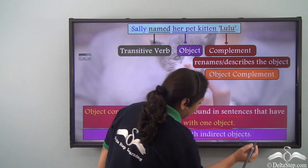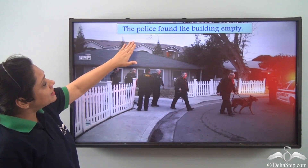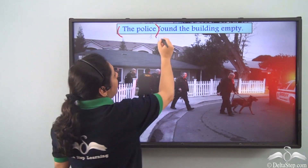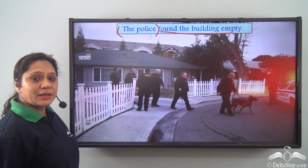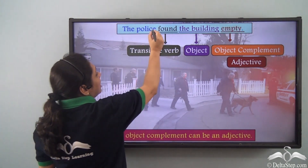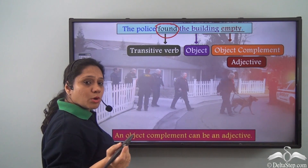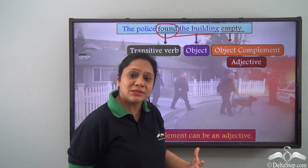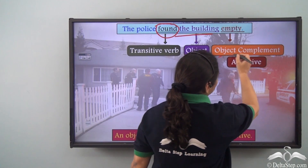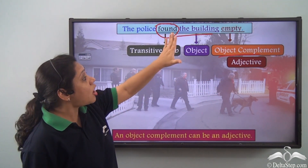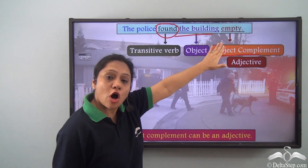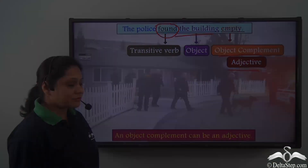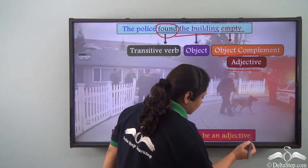Object complements are never used with indirect objects. Consider: 'The police found the building empty.' The subject is 'the police,' and 'found the building empty' is the predicate. This predicate has the transitive verb 'found' which takes the object 'the building.' Now 'empty' is making the sentence meaningful, hence 'empty' is the complement. This complement is telling us more about the object 'the building,' so this is an object complement — and we can see it is an adjective. So an object complement can be an adjective.